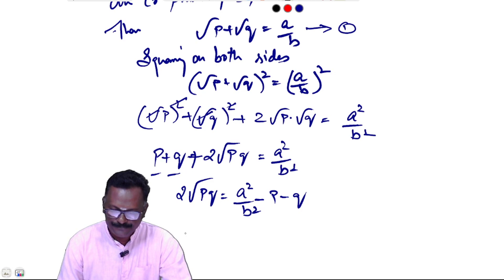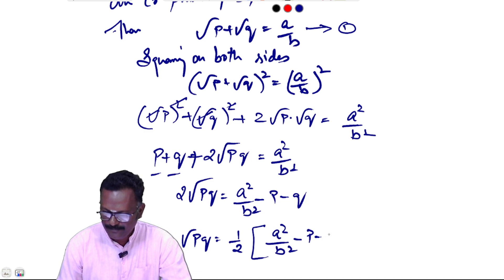So √(pq) = (a²/b² - p - q)/2. This is equation 2.